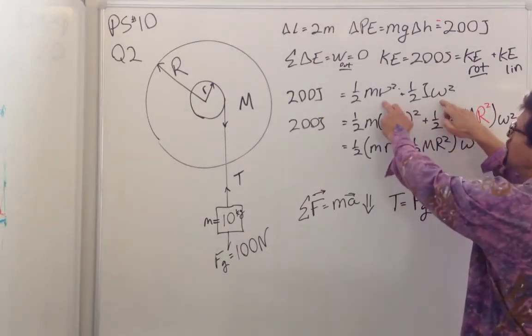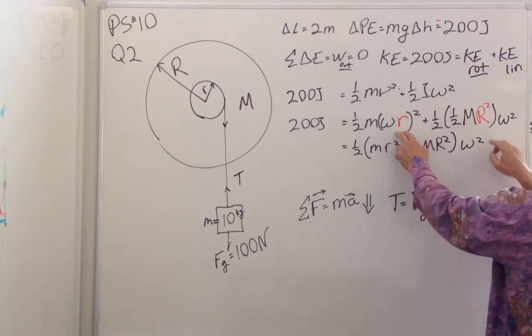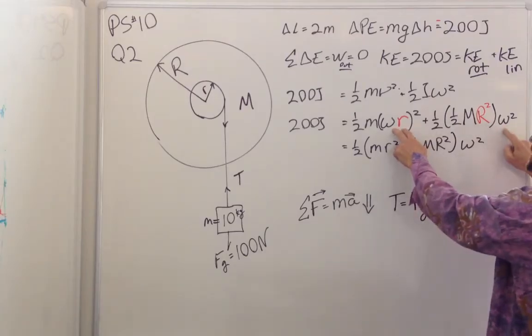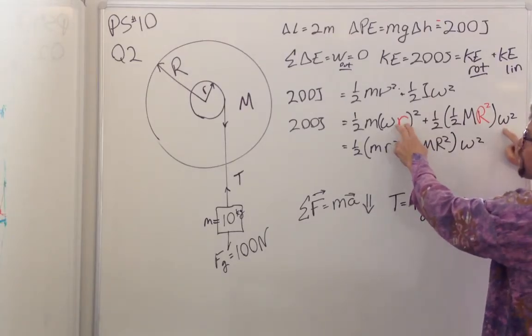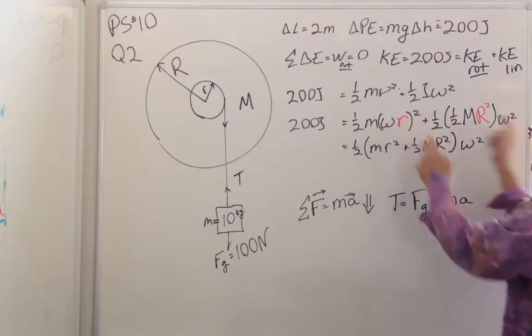How do we deal with these two different variables? We recognize that omega equals V over R, or V equals omega R. Take your pick.